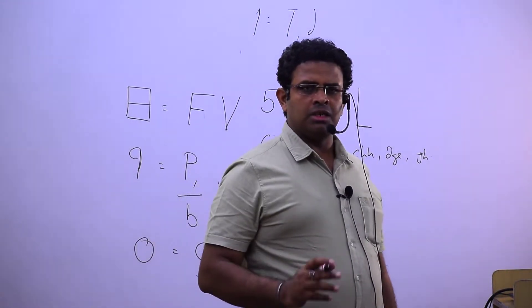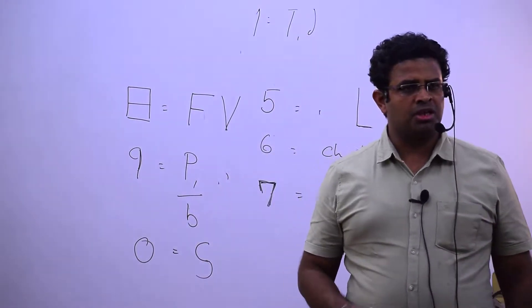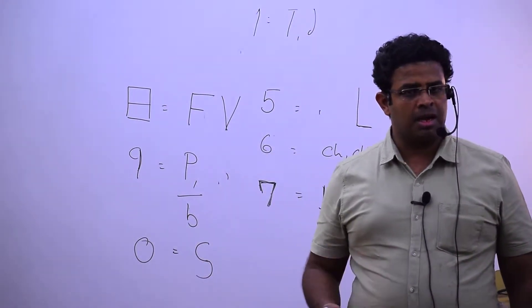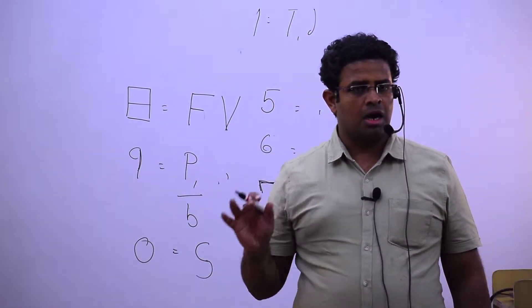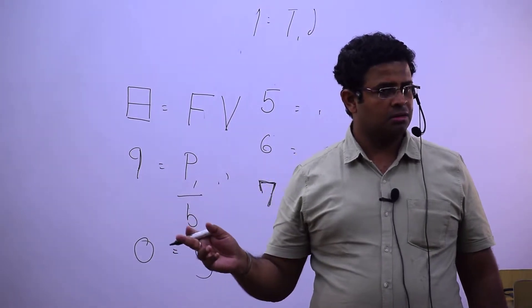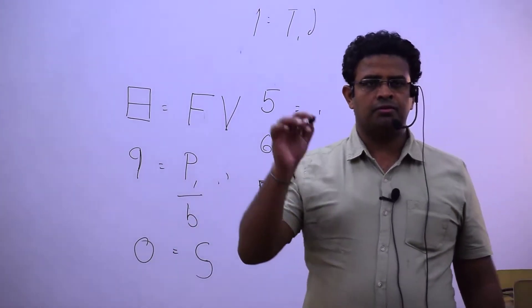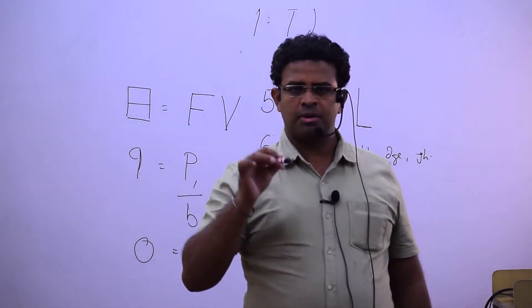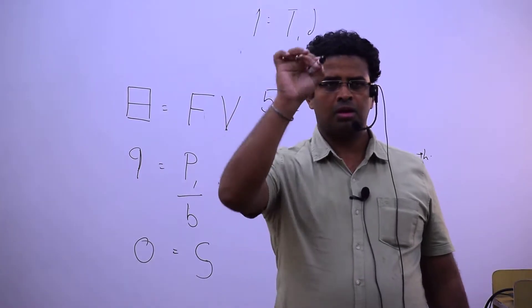3 is becoming m, 4 is becoming r — that is the last letter r. And then 5: what does 5 give us? It gives us l.